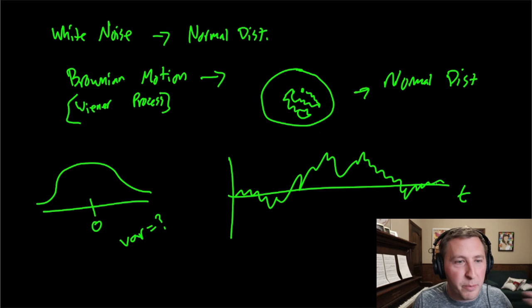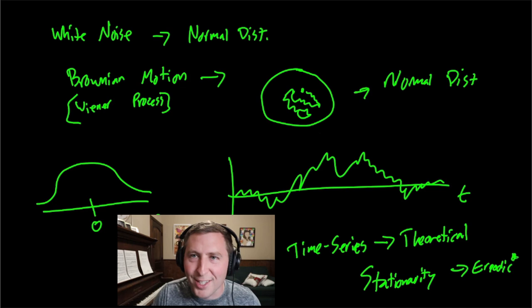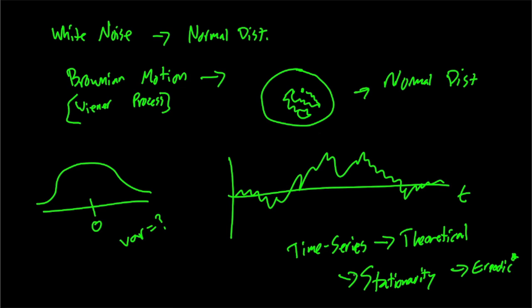This is also critical for time series. This is how we view time series in a theoretical standpoint: a time series is nothing more than random sampling from a distribution. It doesn't have to be normal because it doesn't have to be Brownian motion or a Wiener process — time series are just random samplings from some set of distributions. This is related to something called stationarity, which I'm not going to cover in this video. There are other interesting properties like being ergodic. A time series is just the realization of drawing from some sort of distribution.